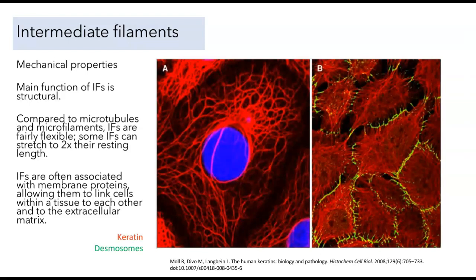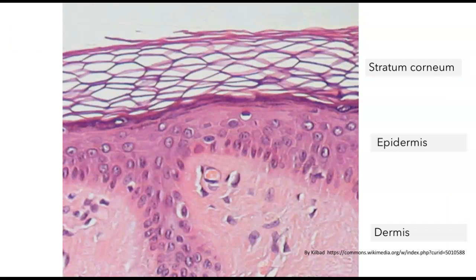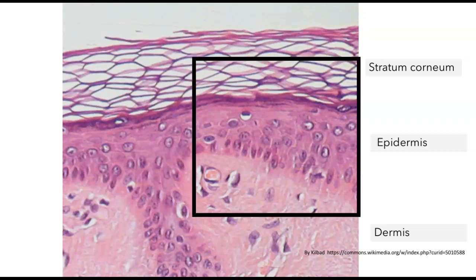The role of intermediate filaments in structure has been studied in a number of different cell types, but probably none are as well understood as in skin. A section through the skin shows the very top layer, the stratum corneum, made up of dead skin cells. Lying underneath is the epidermis, with a basal cell layer where cells are dividing to continually regenerate new skin cells. The deepest part of the tissue is the dermis, with fewer cells and a lot of connective tissue.